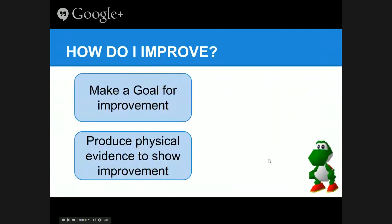That's something we can work through. How? There's a two-step process. First, you need to make a goal for improvement. I have a form students can fill out. They need to tell me which targets they need to improve on, as well as the goal, when, and how they'll improve. Second, they need to produce physical evidence to show improvement.